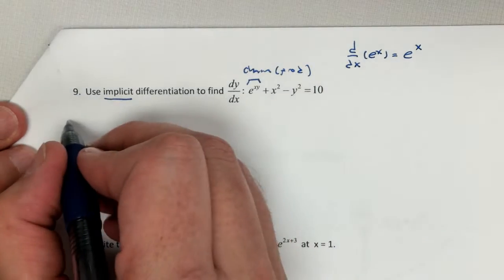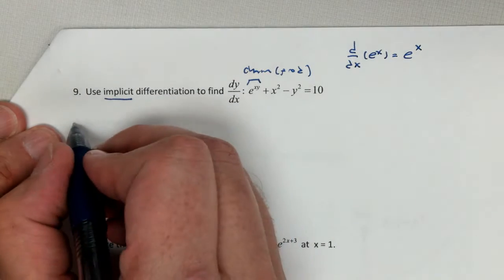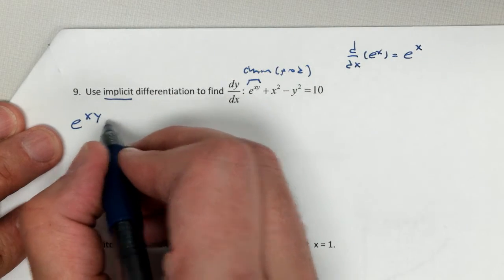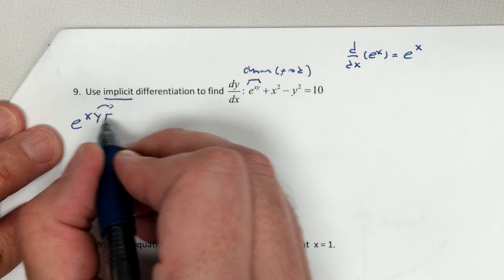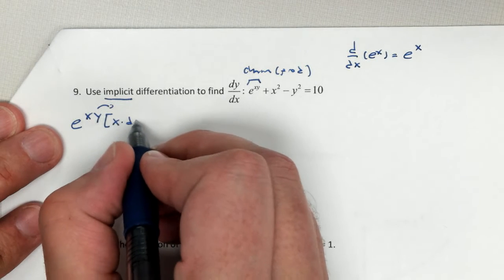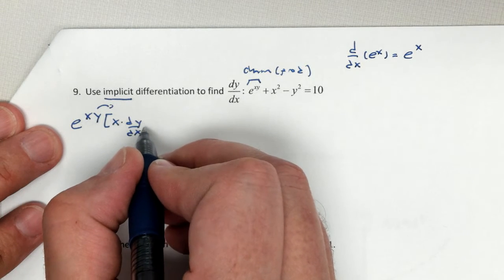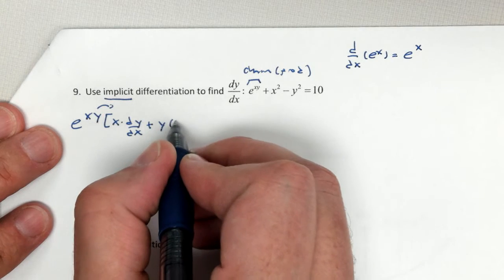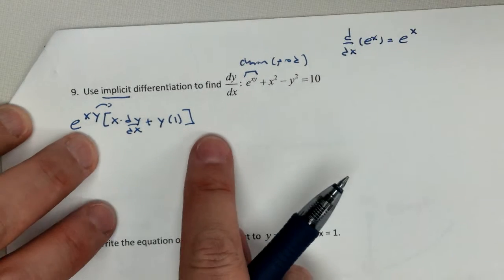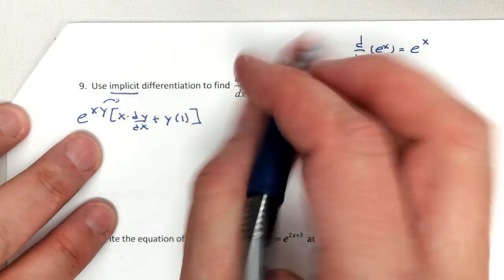So when we take the derivative here, we're going to get e to the xy. That's what my rule says, but there's a product rule. The first times the derivative of the second plus the second times the derivative of the first. Always put your product rule in parentheses. Less mistakes that way.